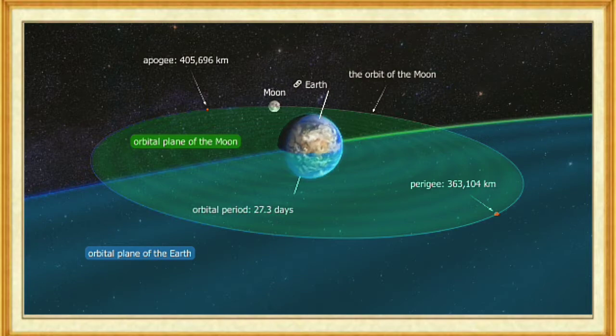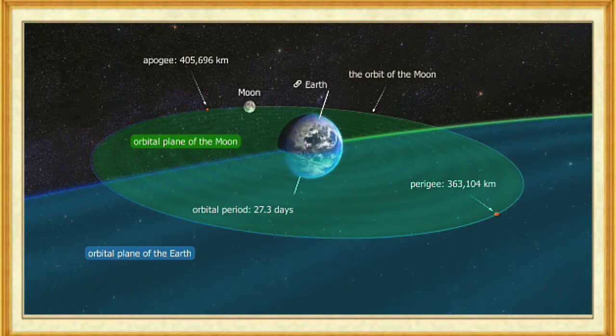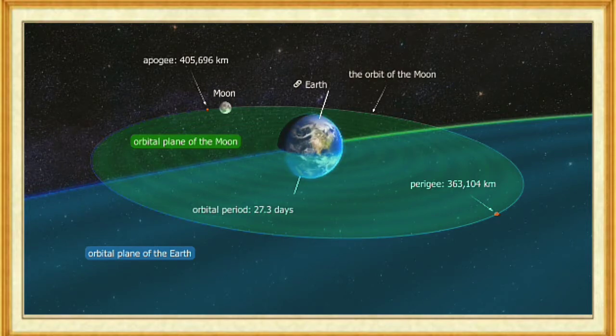Its orbital period is 27.32 days, while the lunar phase period, from full moon until the next full moon, is 29.53 days.